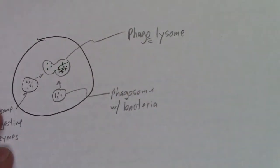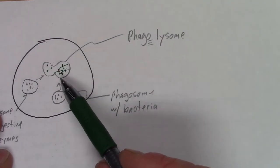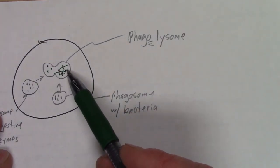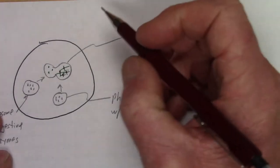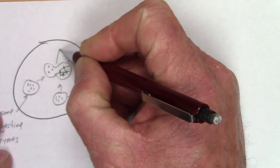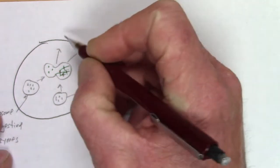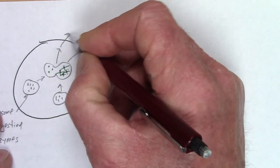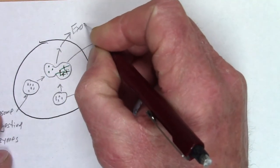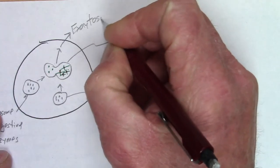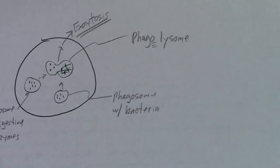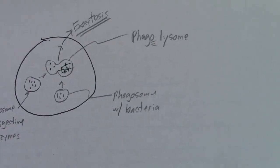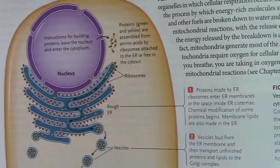Then we have a lot of debris — ground-up, killed bacteria. You need to get rid of those out of the cell, and you move things out of the cell via exocytosis. That's the nitty-gritty basic story of the lysosomes. Let me show you a better illustration of what I was trying to do — this is out of a different textbook.